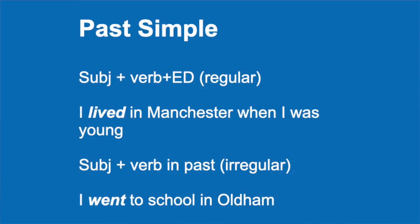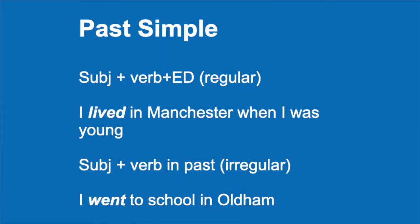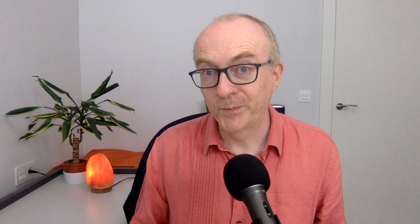Let's look at the form of the past simple. We have the subject plus the verb with ED if it's regular. For example, I lived in Manchester when I was young — 'lived' with ED. If it's irregular, you have the subject plus the irregular verb — there's a list of all irregular verbs. For example, 'to go' becomes 'went': I went to school in Oldham. That's the positive.